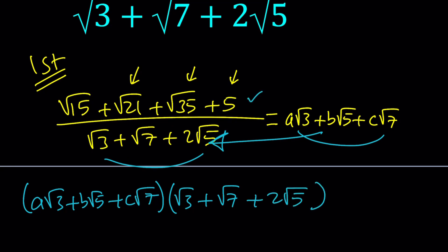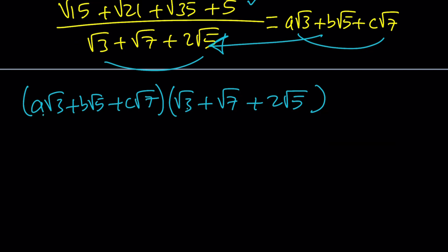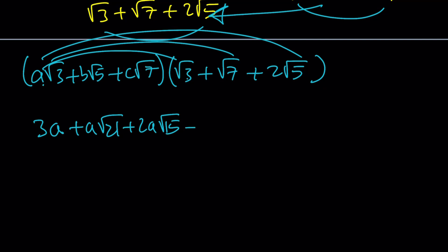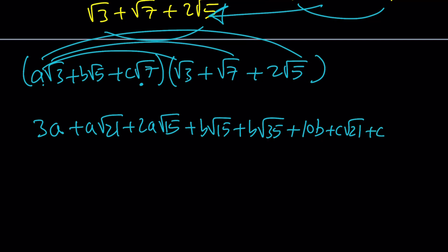Let's distribute. a root 3 times root 3 gives 3a. Whenever I get an integer I'll write that first. Then I get a root 21 plus 2a root 15. Continuing: plus b root 15, plus b root 35, and 2b — since root 5 times root 5 is 5, that gives 10b. Then plus c root 21, plus 7c, and finally 2c root 35.